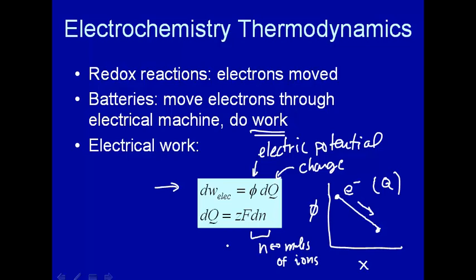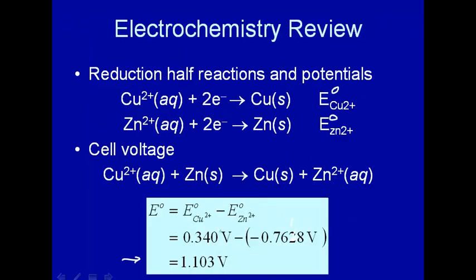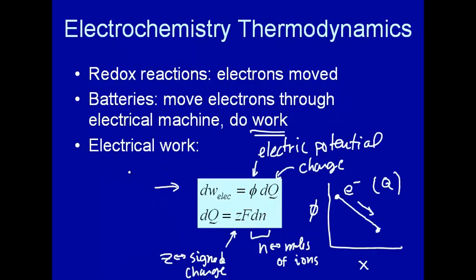So here's the number of moles of ions. Those are things that carry charge. And this Z corresponds to assigned charge. Signed means positive for cations and negative for anions. For example, here Z would be plus two. If you had something like sulfate, Z would be minus two.